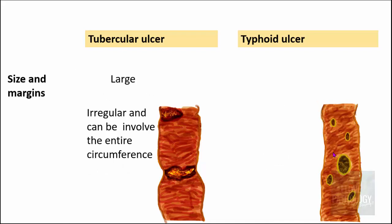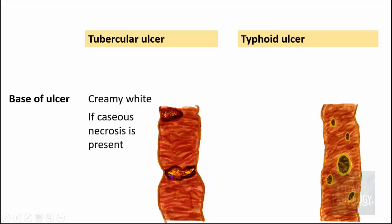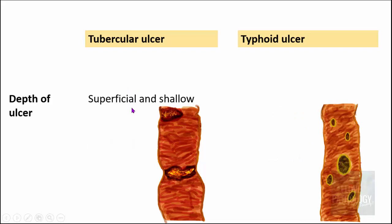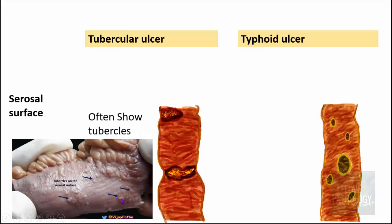Regarding the size and margins of ulcers: tubercular ulcers are large, often irregular, and can sometimes involve the entire circumference of the small intestine. Typhoid ulcers are small, variable, can be multiple, and are often regular and oval in shape. The base of tubercular ulcers may show creamy whitish material due to caseous necrosis, whereas in typhoid ulcers the base shows blackish discoloration due to mucosal sloughing. Tubercular ulcers are often superficial and shallow, while typhoid ulcers can be superficial or deep. The serosal surface in tuberculosis often shows tubercles — tiny nodules — whereas in typhoid the serosa is smooth unless there is perforation.